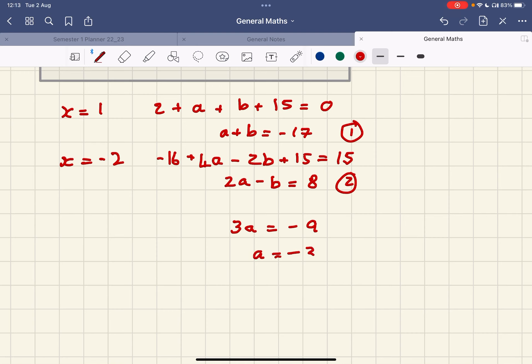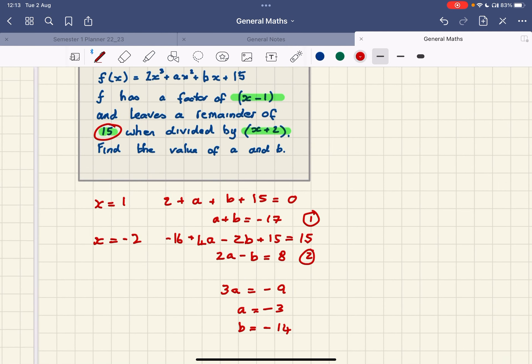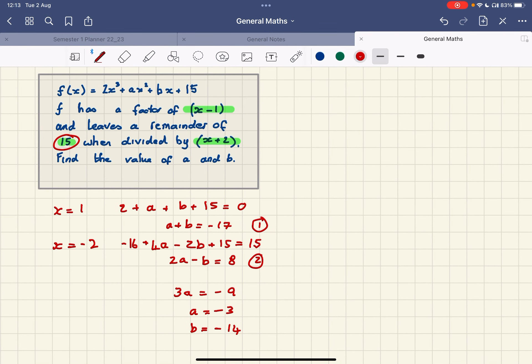And if we go through that either equation we get b as negative 14. So fairly straightforward question you can get at IB on factor and remainder theorem with simultaneous equations.